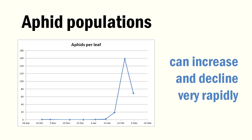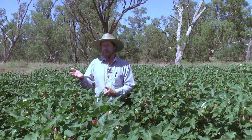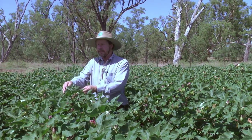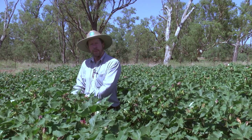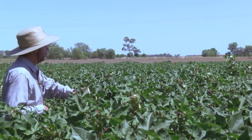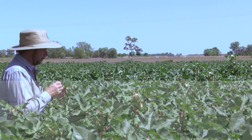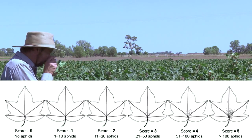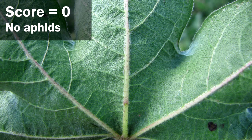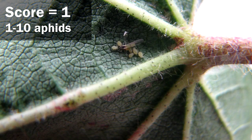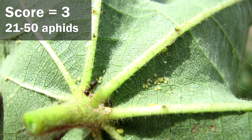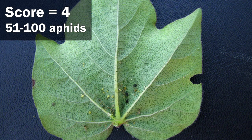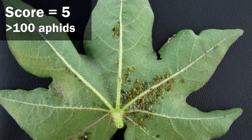When you are monitoring aphids, select a plant at random in the field. Count down to leaf four or leaf five below the terminal, then remove that leaf and score it on the one to five system for aphid abundance. The one to five system lets us rank leaves as a one — very low numbers of aphids — up to a five, which is very high numbers of aphids. This gives us more information about the aphid population than just scoring presence or absence.